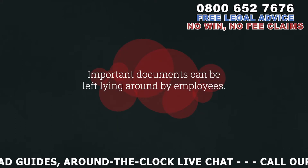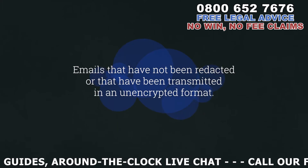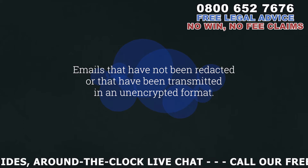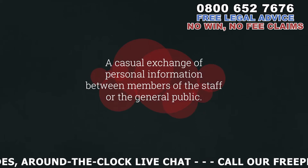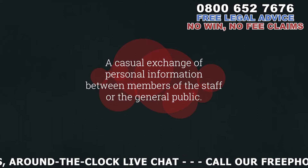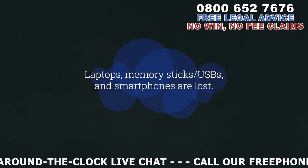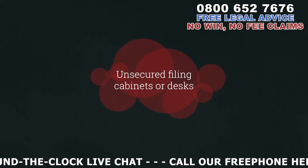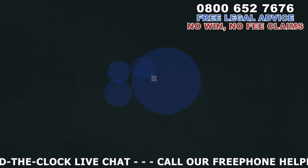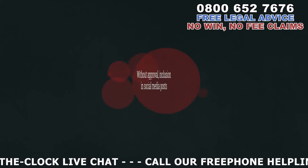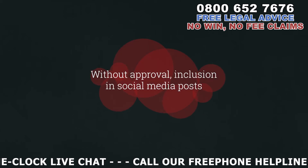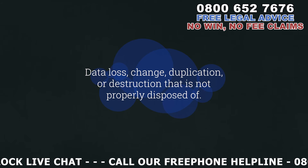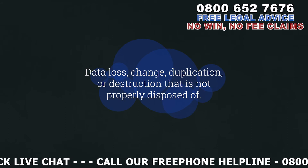Important documents can be left lying around by employees. Emails that have not been redacted or have been transmitted in an unencrypted format. A casual exchange of personal information between members of staff or the general public. Laptops, memory sticks or USBs, and smartphones being lost. Unsecured filing cabinets or desks. Emails sent in a group without approval, inclusion in social media posts, and data loss, change, duplication, or destruction that is not properly disposed of.